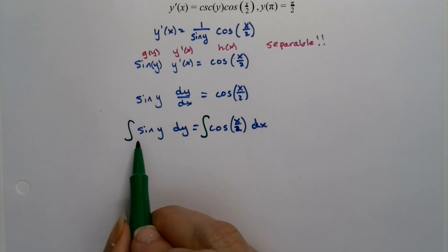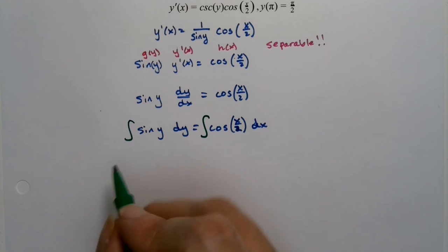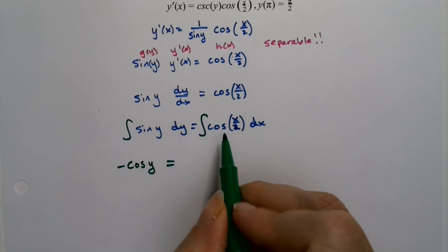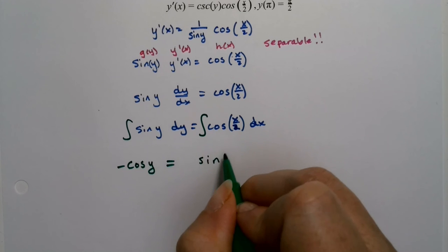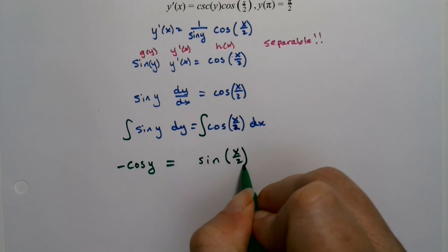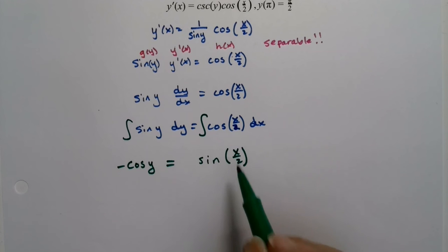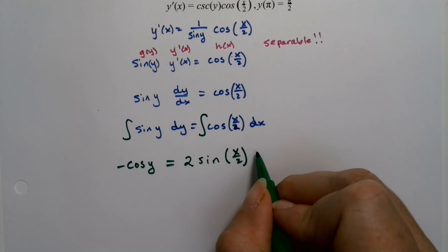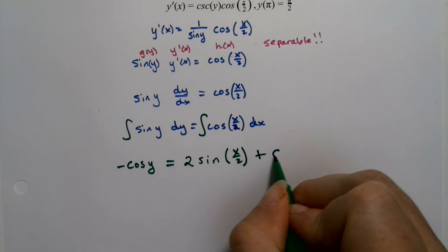So when I integrate sine, the integral of sine is negative cosine. The integral of cosine, of course, is sine, but the problem is that it's x over 2. So technically this is like a baby u substitution. u would be x over 2, du would be a half. We don't have a half, so we multiply by 2 plus c.